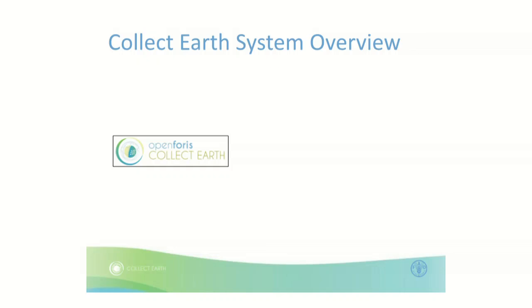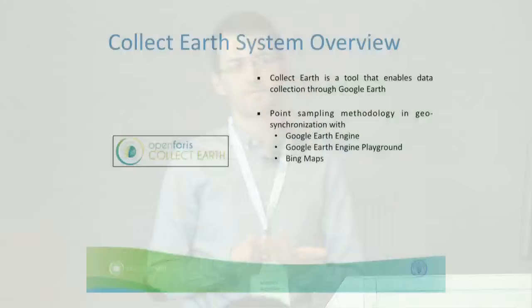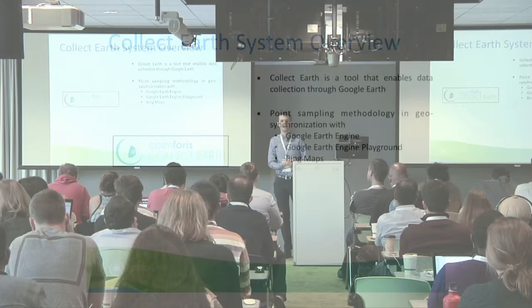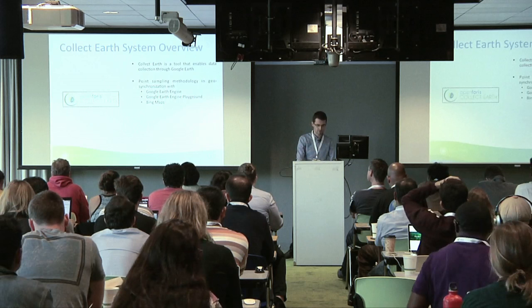I'm going to talk about the CollectEarth system itself — what it is and how it works. It's mainly a tool that enables data collection. It's built on top of Google Earth, so we're thinking about visual interpretation. It's a point sampling design approach: you have a grid, you plot this grid on top of Google Earth, and then you have a pop-up card where you can collect information. At the same time, we have geo-synchronization with other tools like Google Earth Engine — the API Playground or the Code Editor — and also Bing Maps as another source of high-resolution imagery.